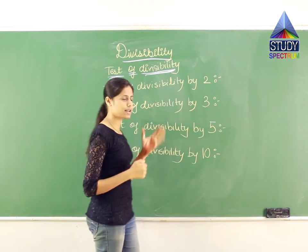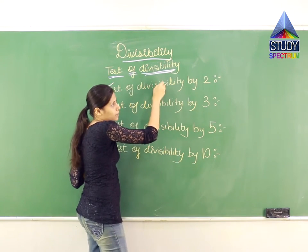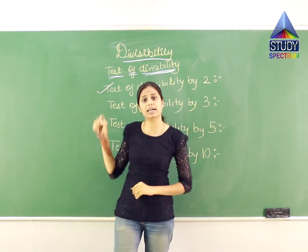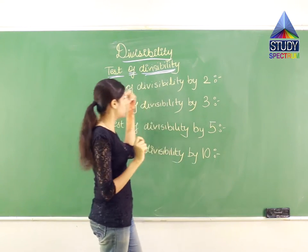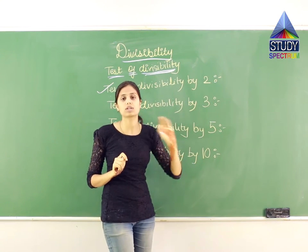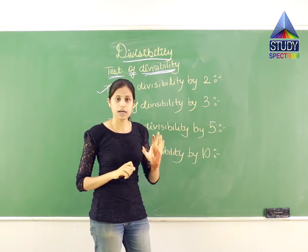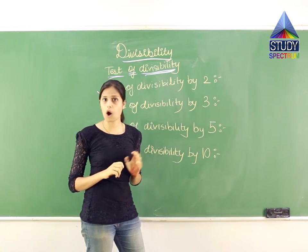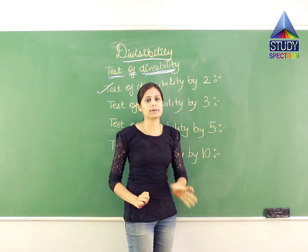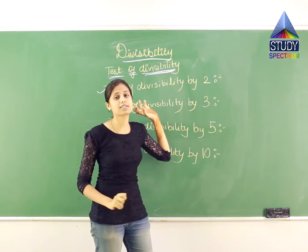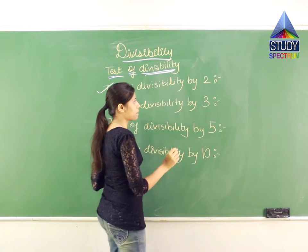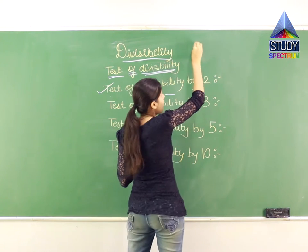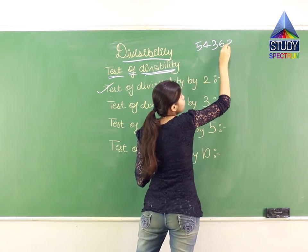Now let us start with the first: test of divisibility by 2. What does it mean? We need to check whether a given number is divisible by 2 or not. It is very simple and a very accurate check. You just have to check the last digit — the number in the unit place. Suppose I have a large number like 5,432,8 — we look at the last digit, which is 8.